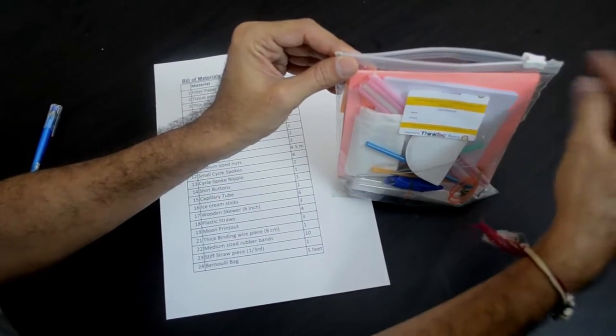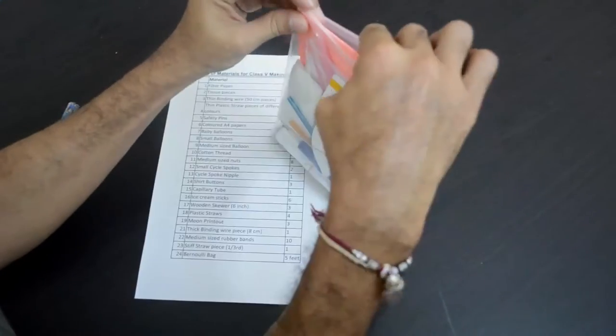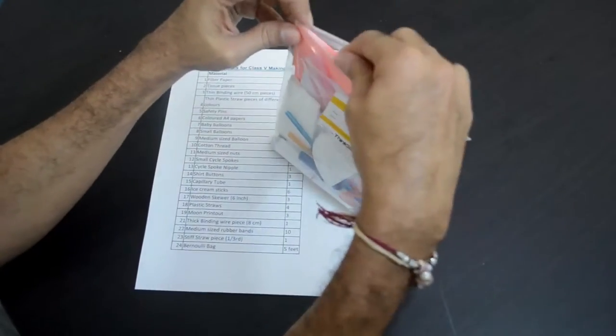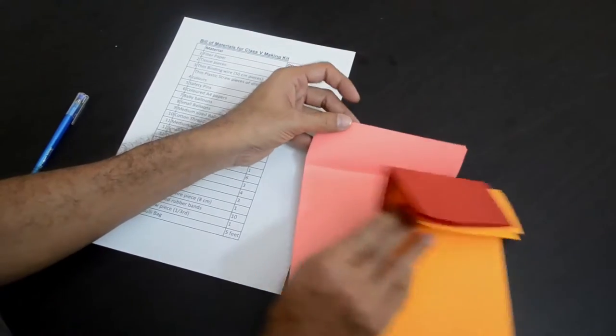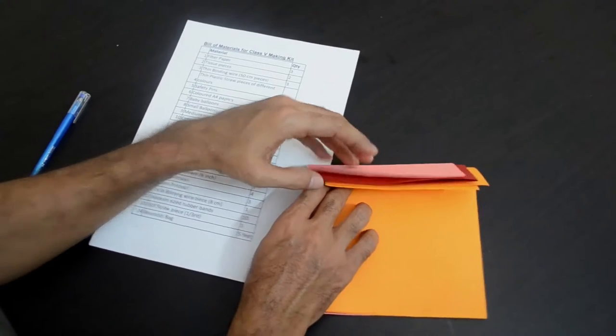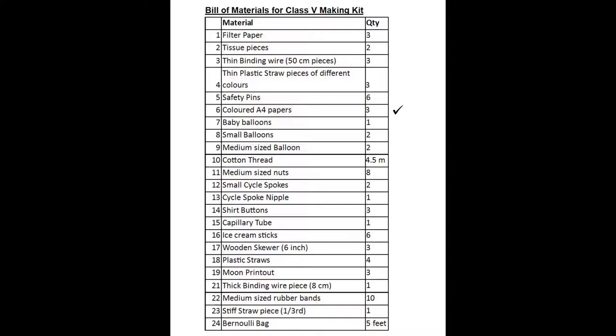If you keep pulling further this may come off. We have placed some A4 papers which are of different colors. There will be 3 papers, 3 A4 papers of different colors. In our list of items, this is item number 6, colored A4 papers, 3 of them.